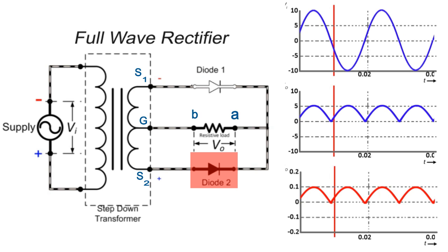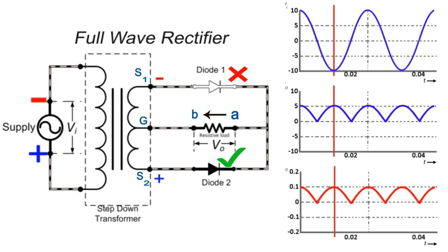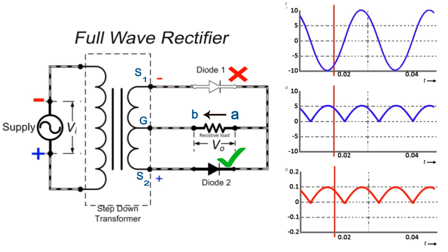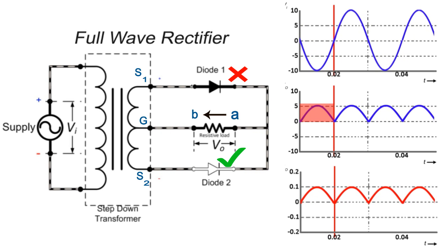Thus, the diode D2 will be forward biased and D1 will be reverse biased. The diode D2 will conduct and D1 will not conduct during the negative half cycle. The current flow will be in this direction, again from A to B, and the voltage drop appears across the R load with the same polarity.